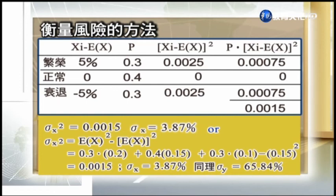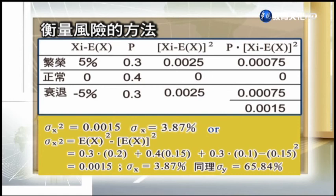第一欄是實際報酬扣掉期望報酬。環球水泥景氣環榮時，20%減15%，差是5%，平方是0.0025，乘以機率30%得0.00075。正常時15%減15%為0，所以激励乘以差異的平方也是0。衰退時4%減15%，差是-11%，平方是0.0121，乘以0.3得0.00363。全部加總變異數是0.00438，開根號標準差是約3.87%。另外一個算法是用EX平方減期望值平方，結果一樣。